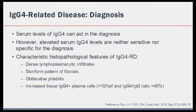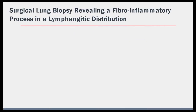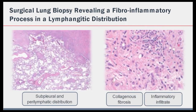So how do we make a diagnosis of IgG4-related disease? Serum levels of IgG4 can help. However, it is important to note that elevated levels of serum IgG4 are neither sensitive nor specific for this diagnosis. Histopathology is typically required to establish the diagnosis of IgG4-related disease with absolute certainty. The characteristic histopathological features include a dense lymphoplasmocytic infiltrate, storiform fibrosis, obliterative phlebitis, and increased number of IgG4 cells on the biopsy. To further investigate the etiology, the patient underwent a surgical lung biopsy.